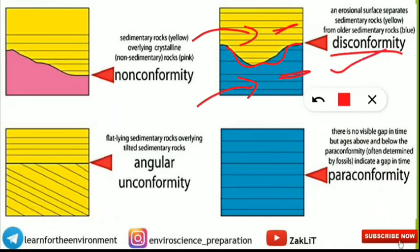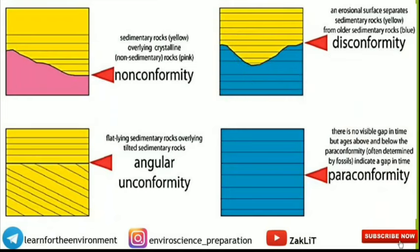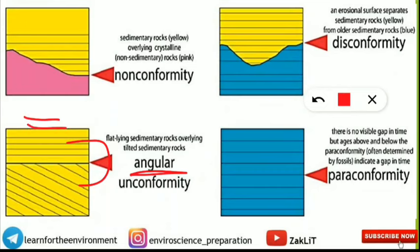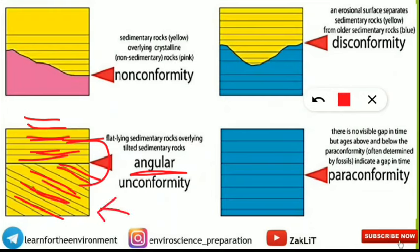There is a slight difference in words but a huge difference in meaning. The third is angular unconformity. As the name suggests, there should be a certain tilt. Both are sedimentary rocks, but as you can see in the picture, the upper sedimentary rocks have a flat-lying surface with flat lines, while beneath them the layers are inclined or tilted sedimentary rocks.